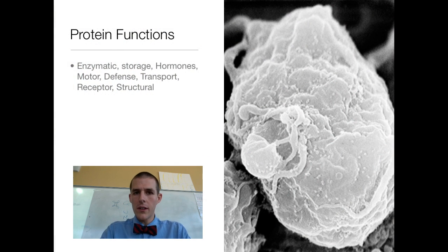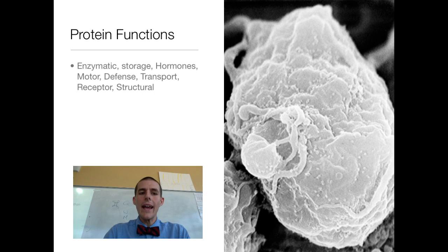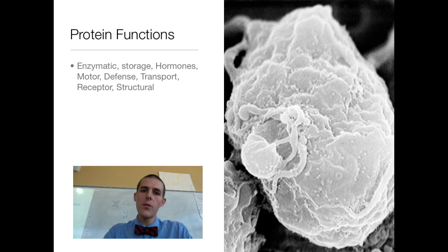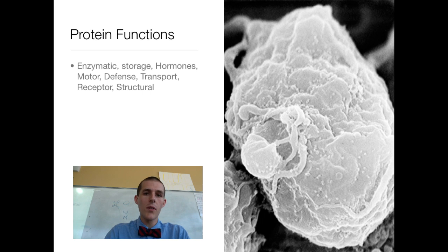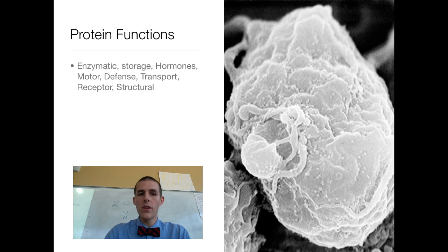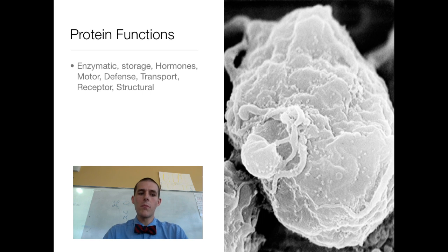When it comes to functions, proteins do a ton of stuff. Enzymes in the body are proteins — they are responsible for speeding up chemical reactions. There are storage proteins, proteins that serve to communicate in the body as a hormone, and motor proteins that cause things like muscles to contract. You've got defense proteins — that would be your immune system — transport proteins that carry molecules throughout your body, receptor proteins that work in signal transmission from one cell to the next and through the endocrine system, and structural proteins that keep you upright and make up many components of the cell membrane.